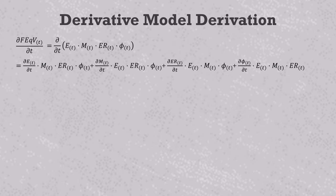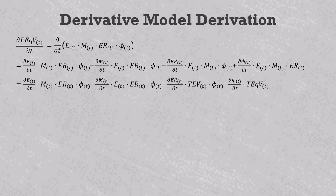Now we can simplify this equation a bit because at any time T, the product of E and M is TEV, and the product of E, M, and ER is TEqV. And this gives us the following, which is a completely accurate description of how changes in EBITDA, multiple, equity ratio, and phi influence the equity return.